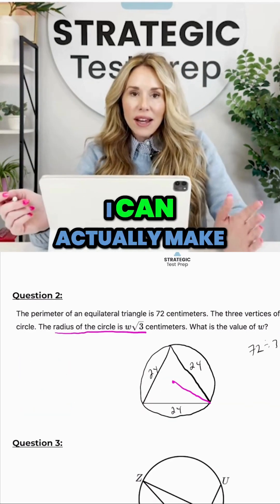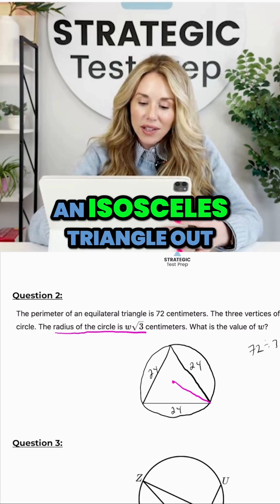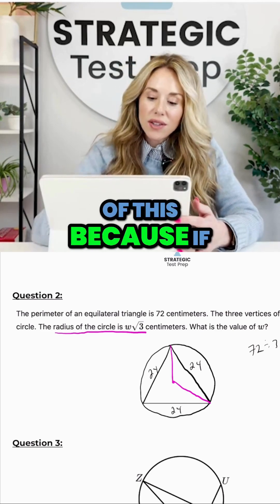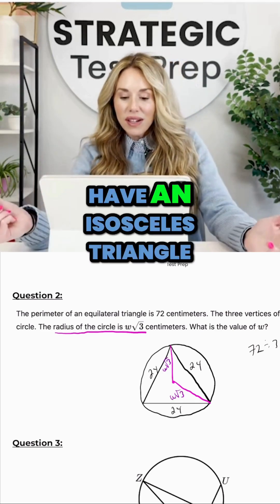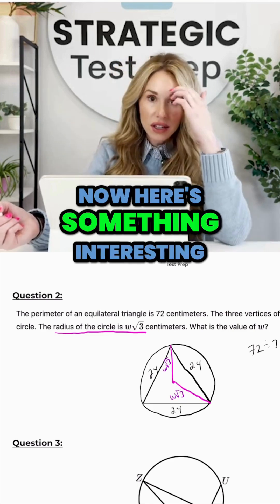I can actually make an isosceles triangle out of this because if this is w√3, this is w√3. Now we know we have an isosceles triangle.